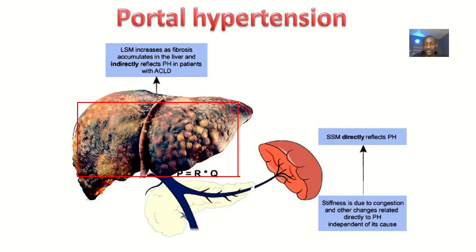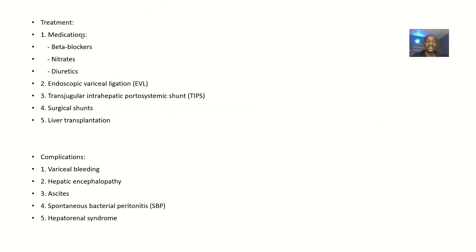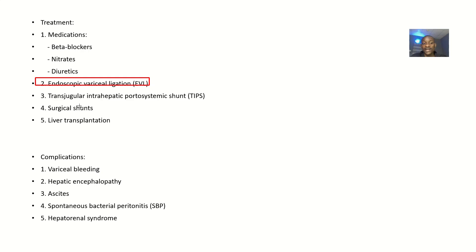Treatment options include medications like beta blockers, nitrates, and diuretics to help the patient urinate and reduce fluid. Endoscopic variceal ligation can be used to block possible bleeding. Transjugular intrahepatic portosystemic shunts (TIPS), other surgical shunts like portocaval and mesocaval shunts, and liver transplantation — which is the gold standard — are also options.